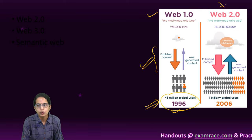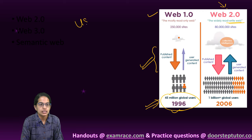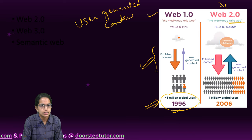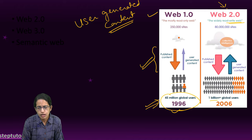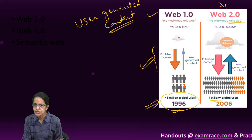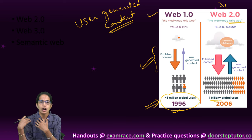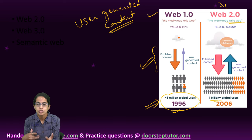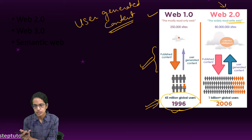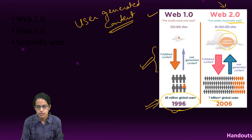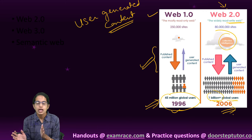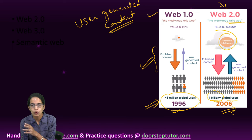Web 2.0 talks about a read-write web, meaning it is user-generated content. Since it is user-generated, there is a lot of publication and it is much easier. It has a participatory culture — you have forums, blogs, and content on Wikipedia being updated by users. There is inter-operability and collective intelligence which comes into focus. There were more than 1 billion users globally around 2006, which is when Web 2.0 was in practice.